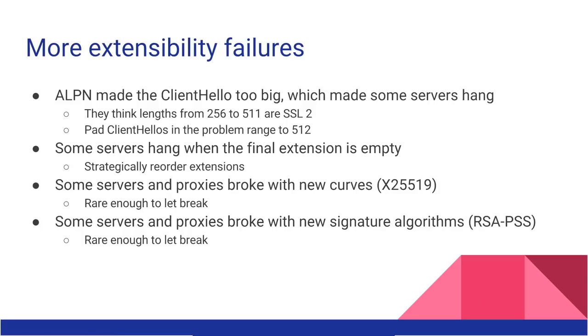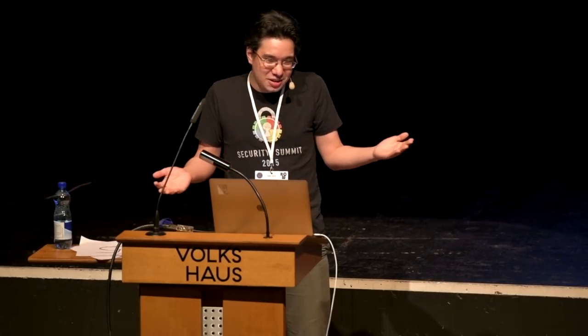Additionally, it's not just the version field that goes wrong — basically everything else in the protocol also goes wrong. ALPN is the way we negotiate HTTP/2. That made the client hello too big, because now we had to list a bunch of protocol names, and we found that a particular load balancer would start hanging when the client hello was bigger than 256 bytes. We thought the problem was a fixed-size buffer, but fortunately one of the vendor's engineers posted to the mailing list that actually, if your length is in a certain range, they think you're speaking SSL 2 and get very confused because of how the 2-byte length was being distinguished. So now all clients produce a padding extension that pads up to 512 if it's in the bad range. This is ridiculous, but it unblocked our extensibility.